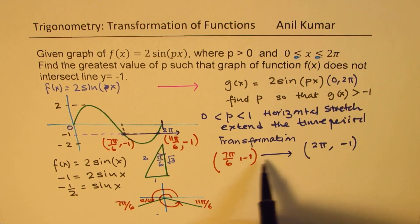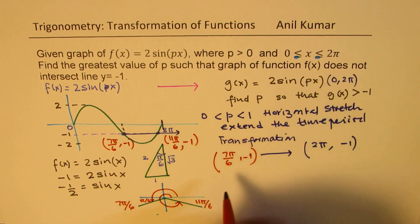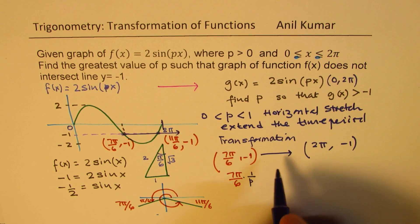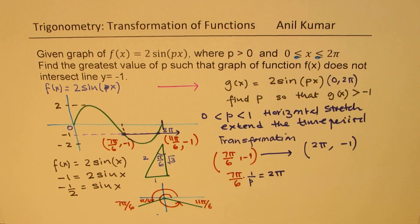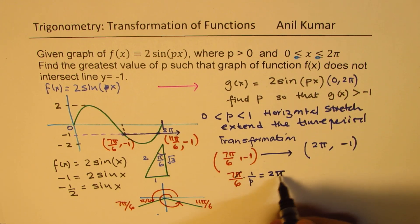So this transformation, basically, is what? Same y value, so the x value, that gives you p. So that means we have 7π/6 times 1/p. The factor is 1/p. That should give you 2π. That is the value of p which we are looking for. So that is the value of p. Let's calculate. So now, π and π cancels and cross multiply. We get 7/12 as equal to p. That is the maximum value.